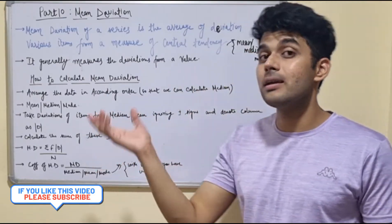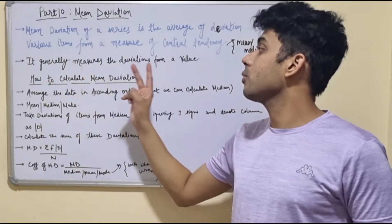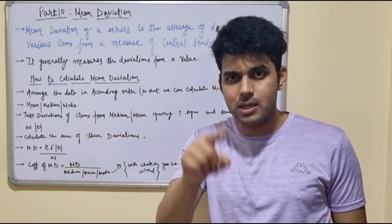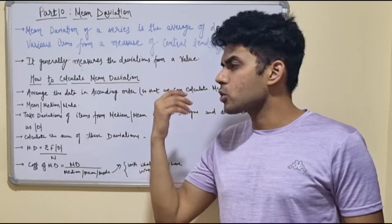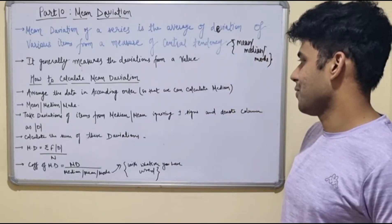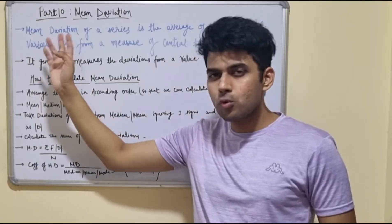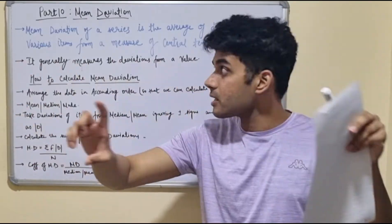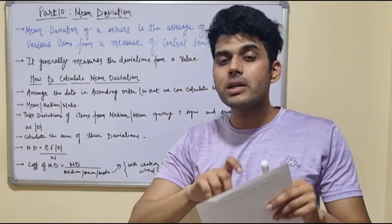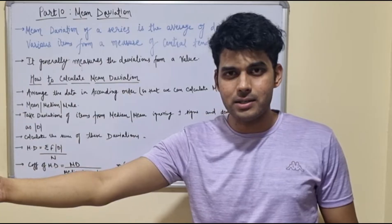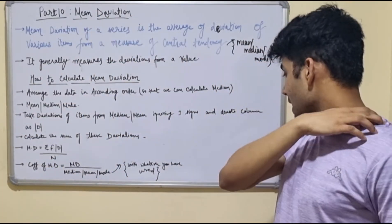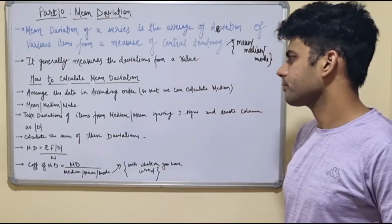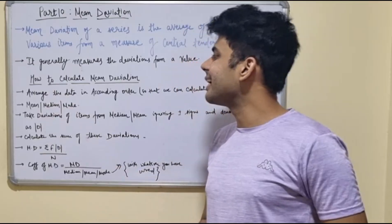Before understanding the example, you need to understand how we calculate mean deviation. These are the series of steps you need to keep in mind while finding mean deviation, so that you can solve any question in seconds. The very first step is that you need to arrange the data in ascending order — from the smallest value to the largest value.